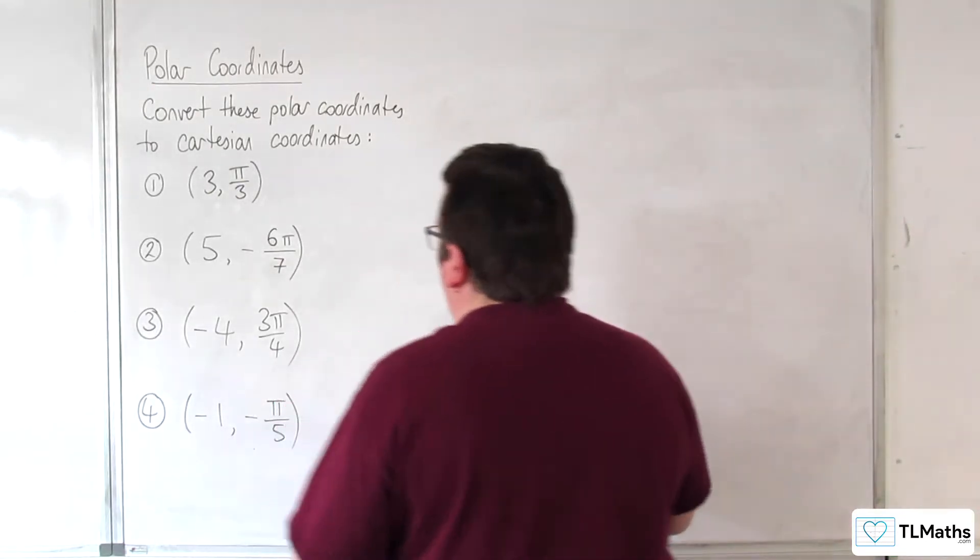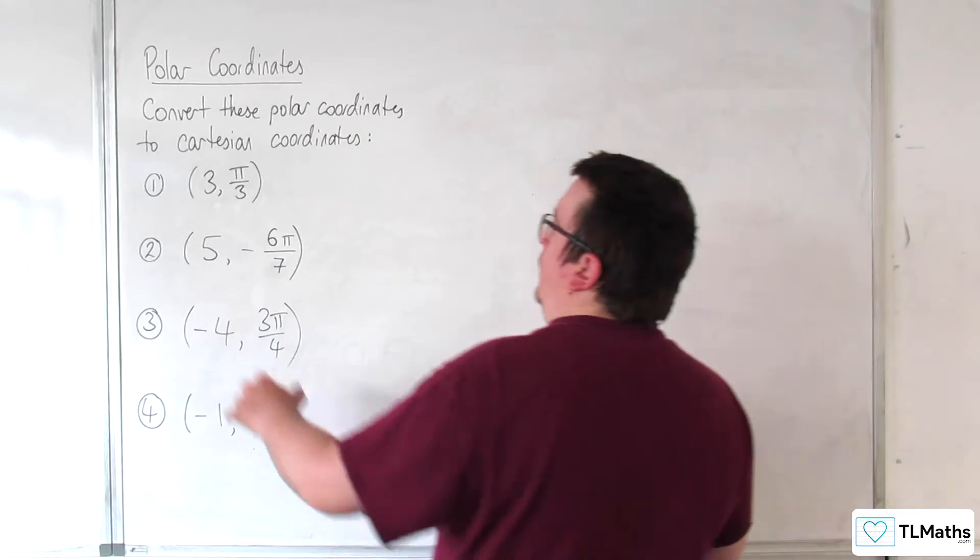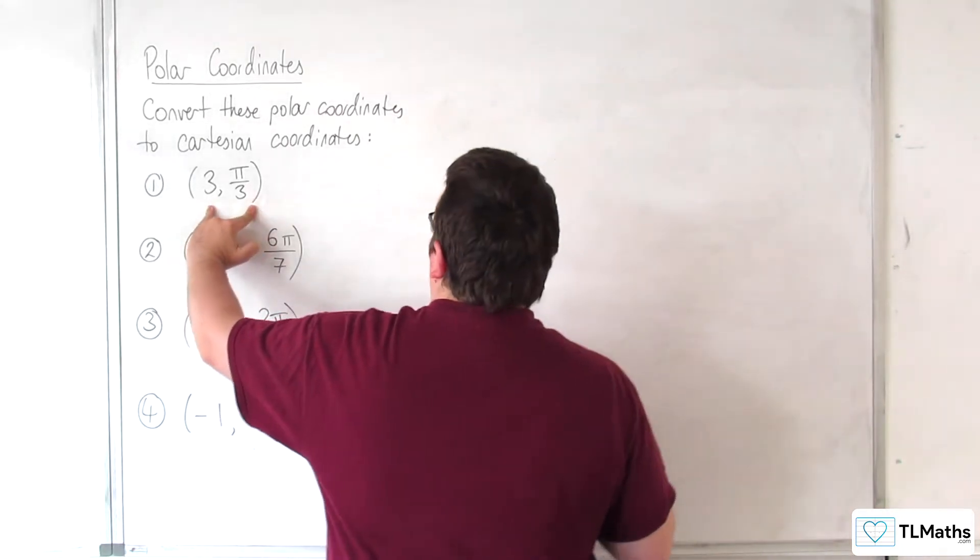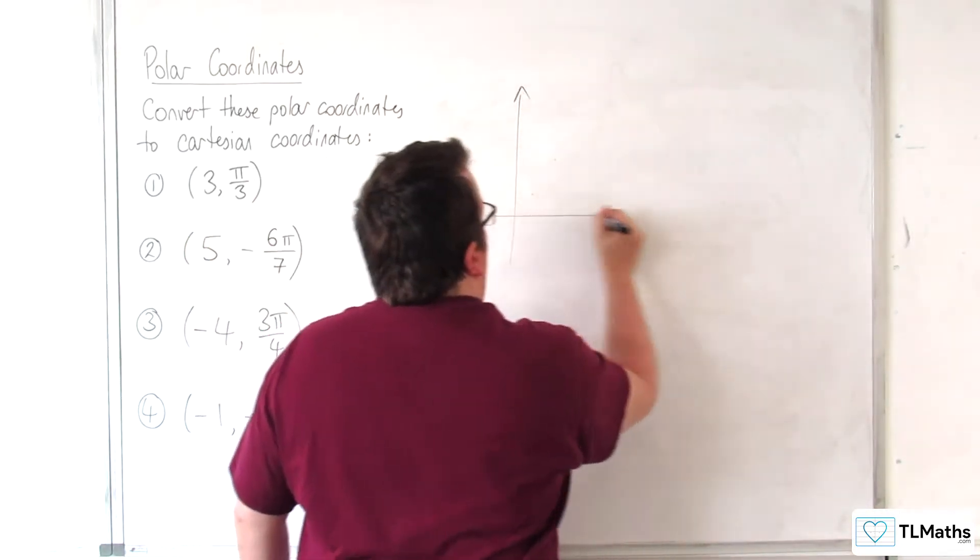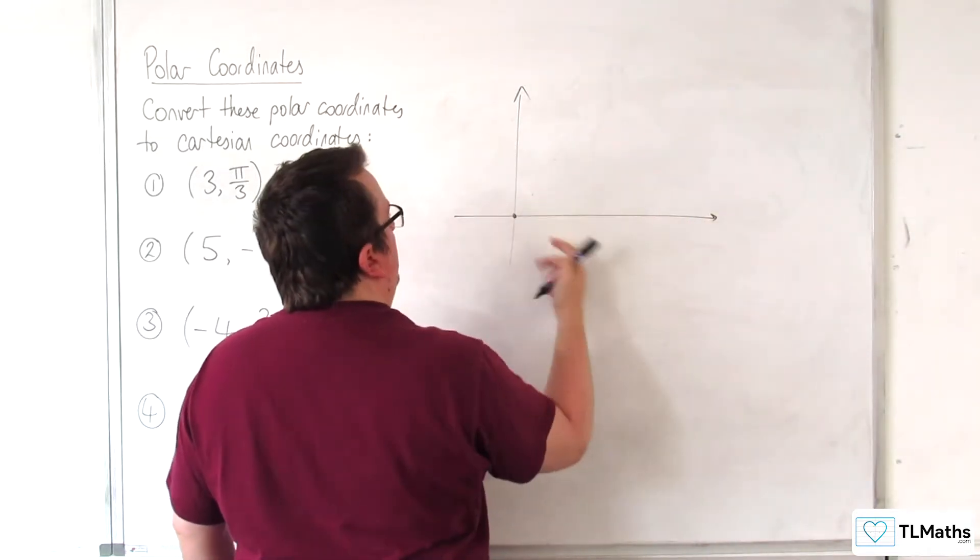Okay, so, let's take a look at number one, 3 pi over 3. So, here's my pole, here's my initial line.